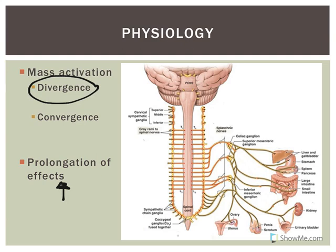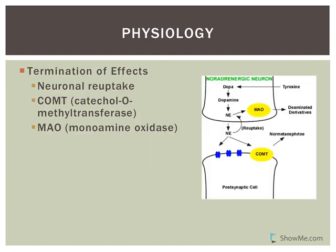To terminate effects of the sympathetic nervous system: norepinephrine released by a post-ganglionic neuron into the synaptic cleft can be taken back up by the neuron. We also have enzymes that break down epinephrine and norepinephrine. COMT - catechol-O-methyltransferase - is an enzyme that degrades epinephrine and norepinephrine, but also breaks down dopamine.